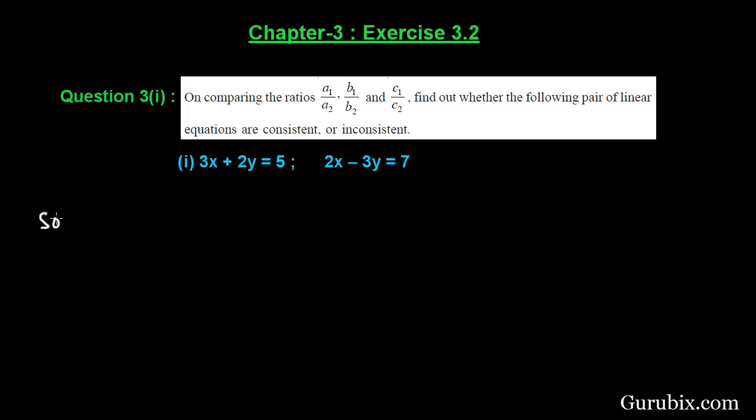So let us see how to do it. From this pair of linear equations, if we calculate A1 over A2, it will be 3 over 2. And if we calculate B1 over B2, it will be 2 over minus 3.